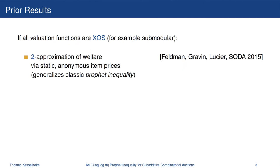What is known for this problem? A lot is known if all valuation functions are XOS. For example, these might be submodular functions — all submodular functions are XOS. Feldman, Graven, and Lucier gave a 2-approximation of the optimal welfare via static anonymous item prices. This is a pretty cool result because it shows that the classic profit inequality, which would be the special case of only a single item, generalizes to multiple items, and they even get the same constant.